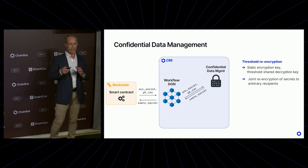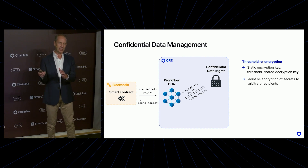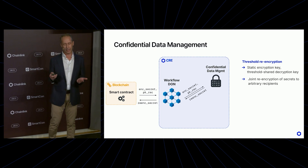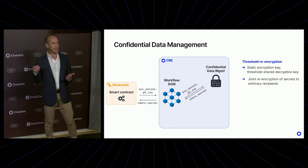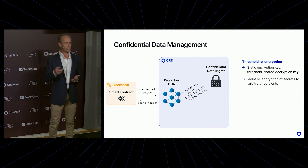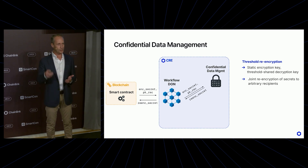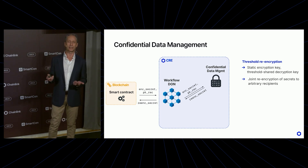It can re-encrypt any secret that was encrypted under the master key to any recipient's public key. By doing that, you can actually make a smart contract or a workflow act as the gatekeeper to an encrypted secret. The smart contract can decide at any moment which secret will be revealed to which recipient — which is already a pretty powerful primitive.